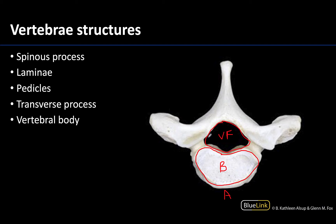The parts of the vertebral arch are going to be these small, kind of foot-like projections which are your pedicles. These will be that connection between the body and the rest of the vertebral arch. This flattened portion of the arch will be the laminae — they are these flattened portions. If you're doing a laminectomy to get to the spinal cord, you would cut through these areas to be able to reflect off the more posterior portions of the vertebra.